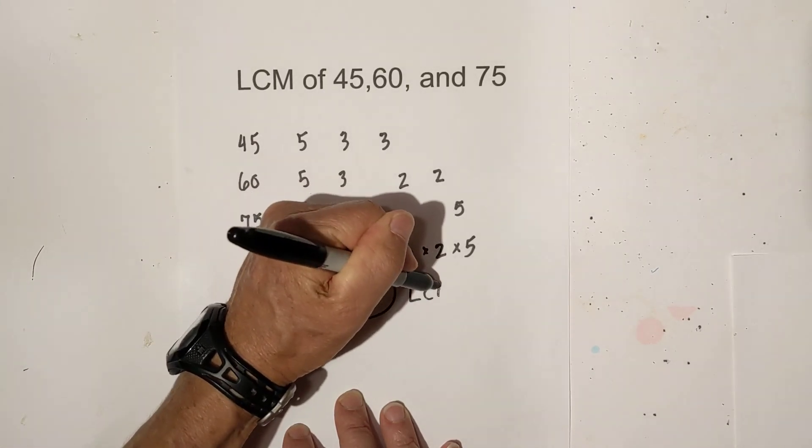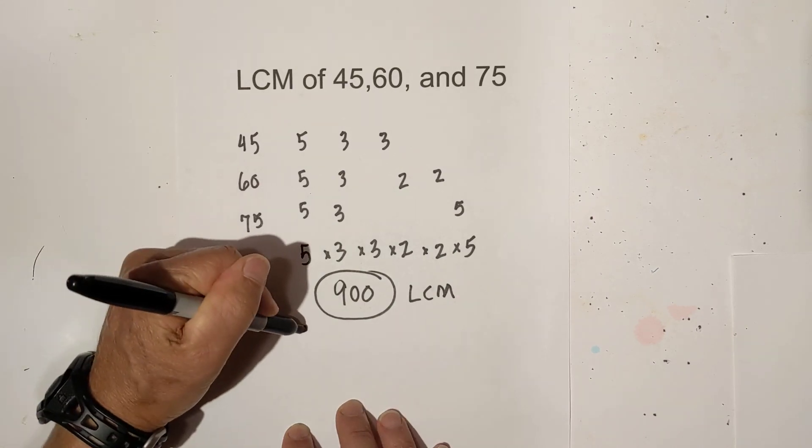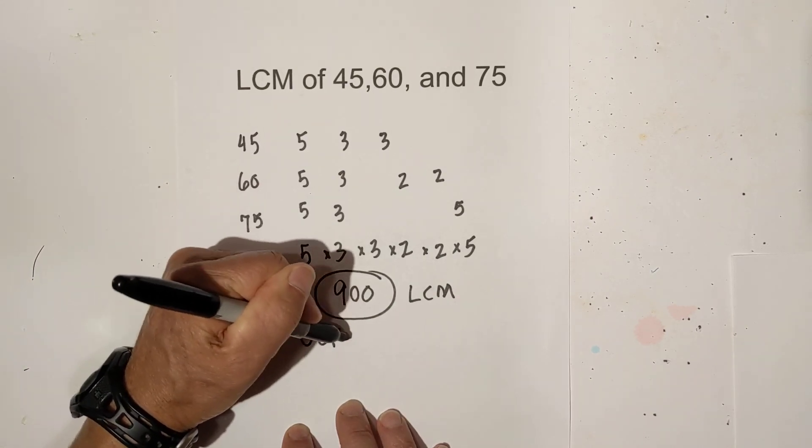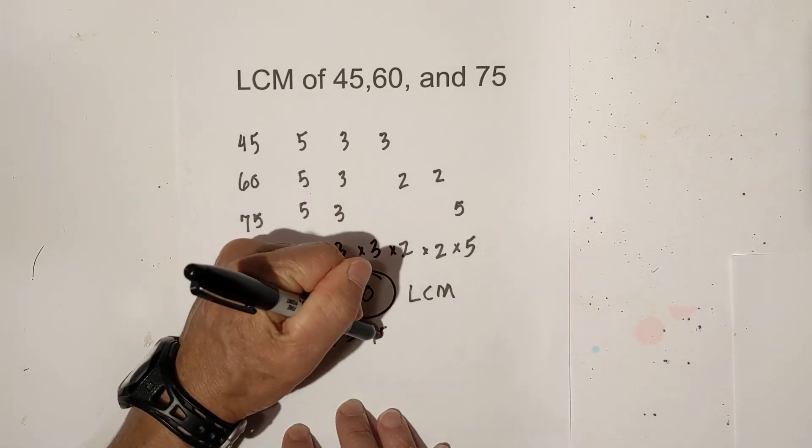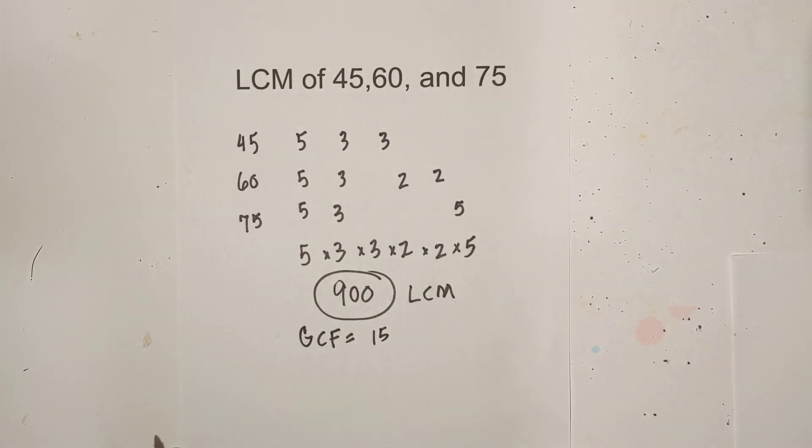So the LCM is 900. So in summary, the GCF of 45, 60, 75 is 15. And the LCM is 900. Remember, kindness multiplies kindness. Thanks for watching.